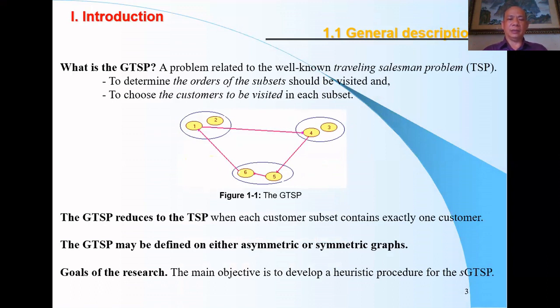Figure 1.1 shows the GTSP problem. The GTSP is reduced to the TSP when each customer's subject contains exactly one customer. The GTSP may be defined on either asymmetric or symmetric graph.